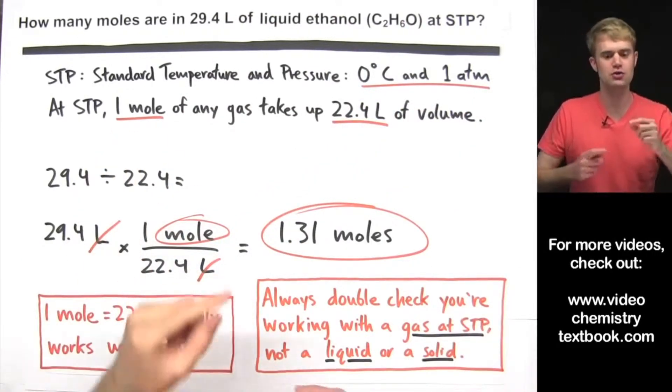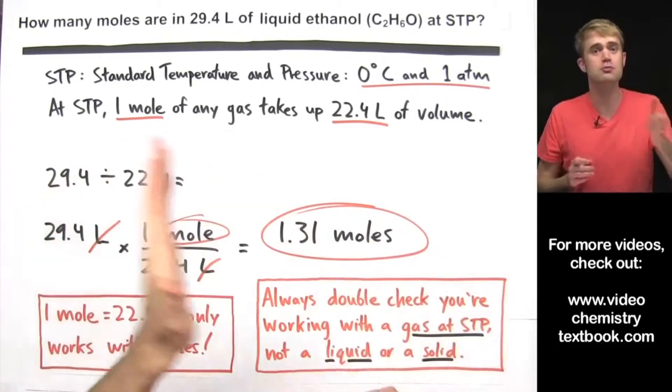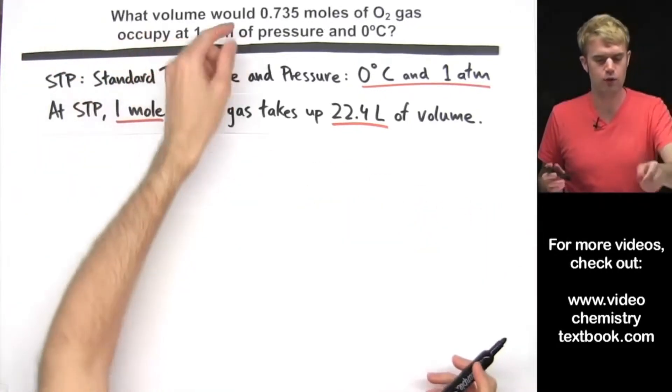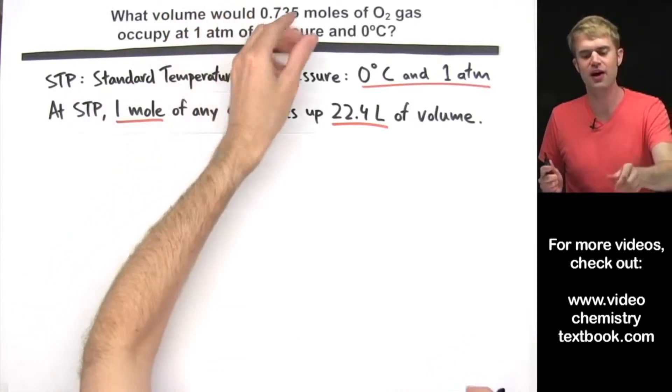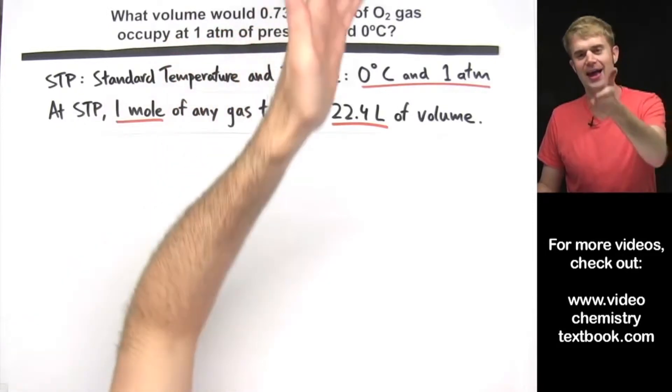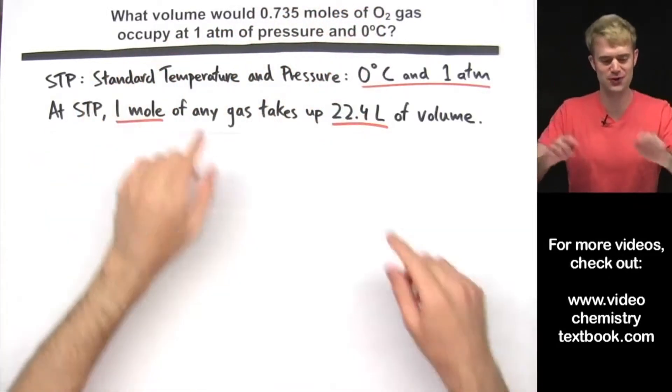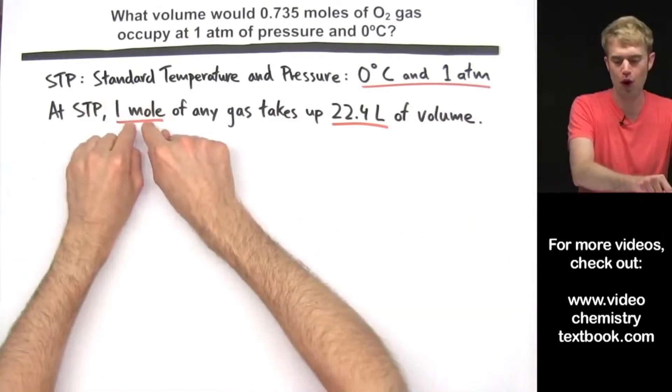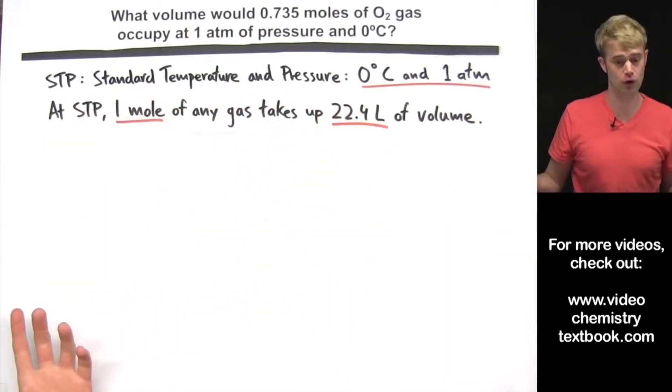Now I'm going to do two more questions where we just do some calculations between moles and liters if you want a little bit more practice. What volume would 0.735 moles of O2 gas occupy at 1 atm of pressure and 0 degrees Celsius? So first of all, we look at these conditions and we know we're at STP so we can use 1 mole equals 22.4 liters.